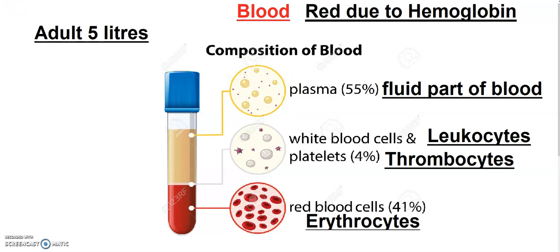The anticoagulant present in blood is called heparin. To summarize the composition of blood: 55% is plasma, the fluid part, and 45% is blood cells — which include WBC, RBC, and platelets.